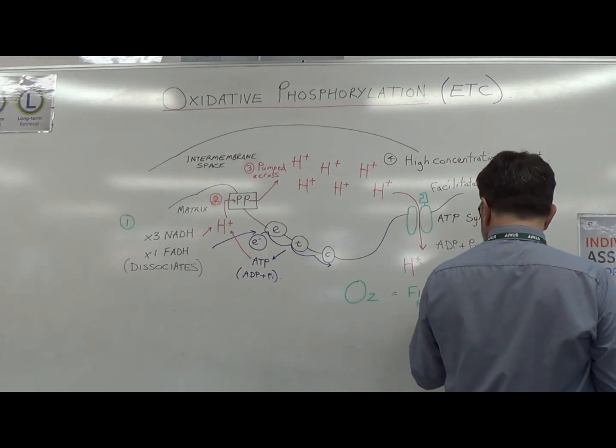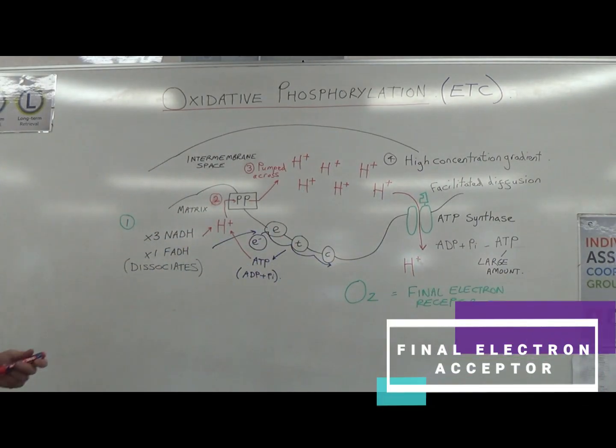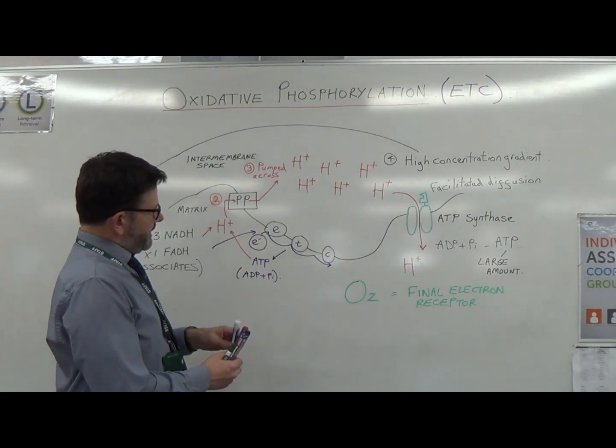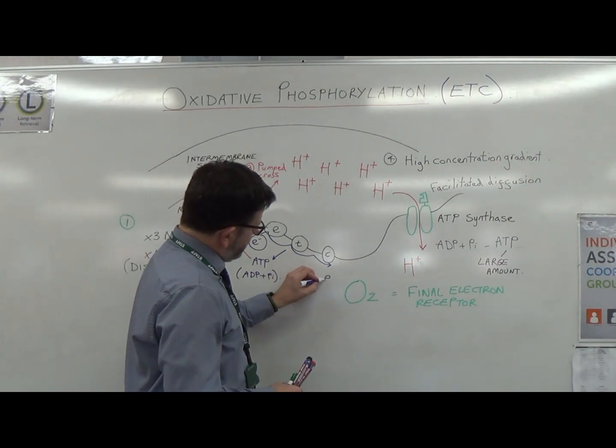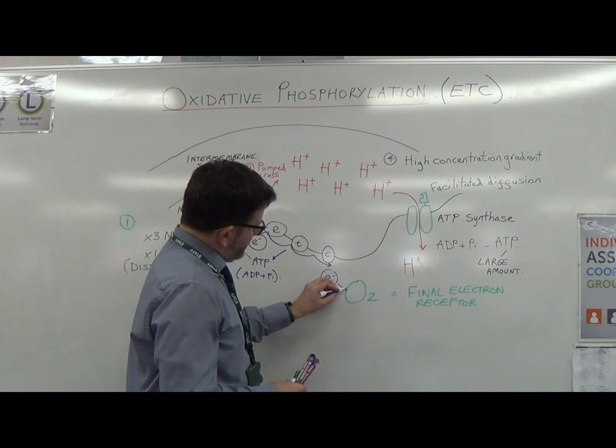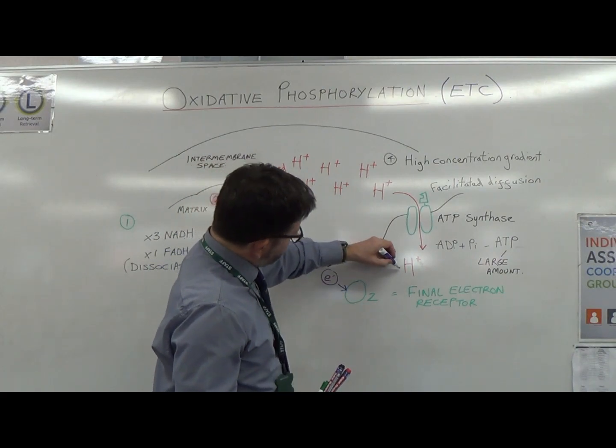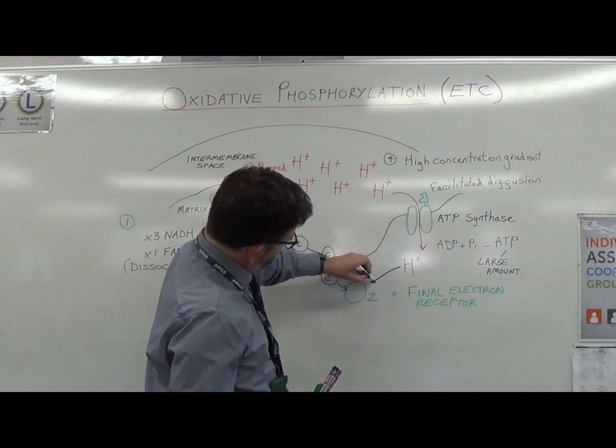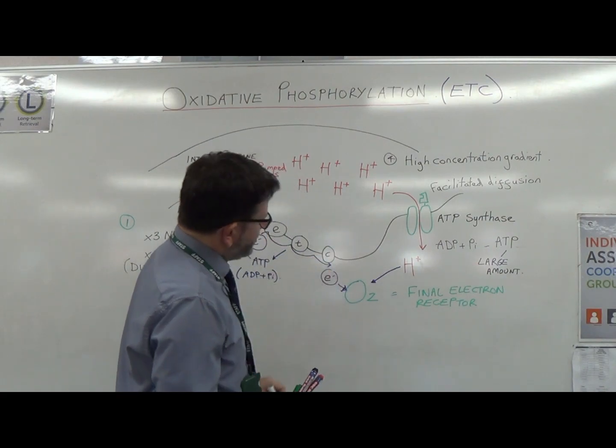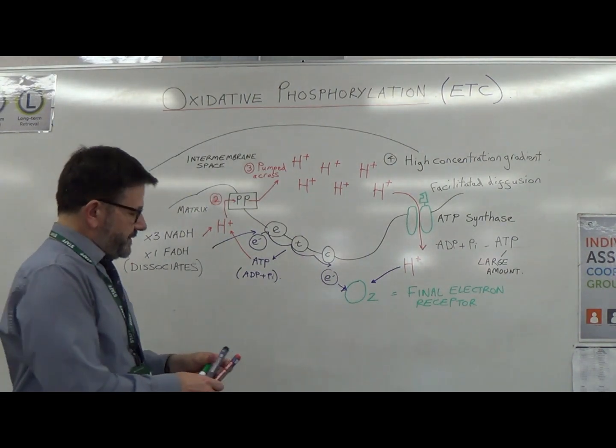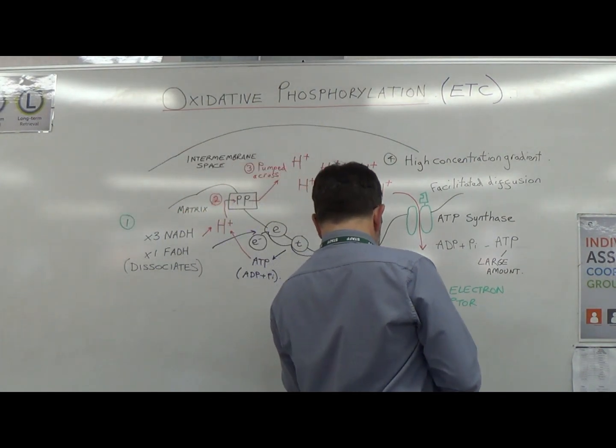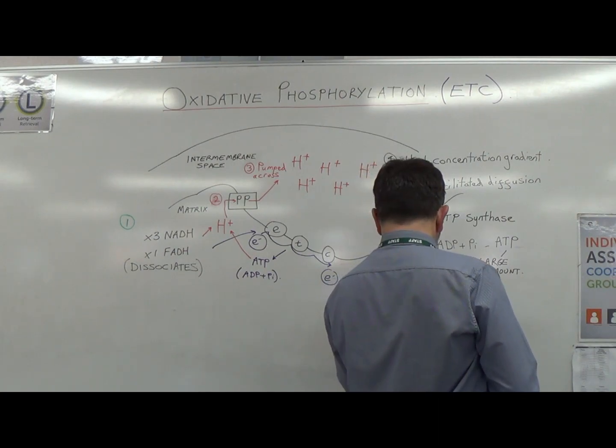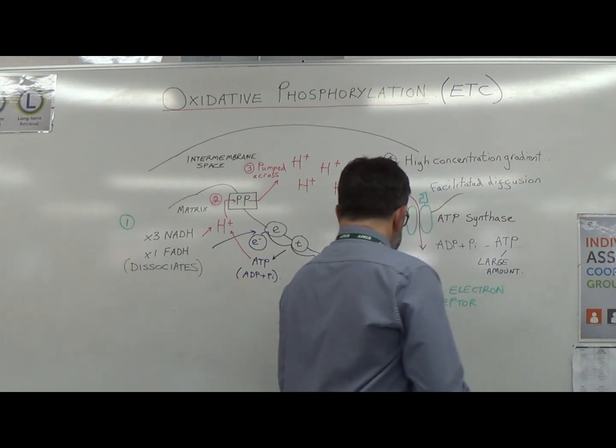So oxygen is known as what we call the final electron acceptor. It's a final electron receptor. What I mean by that is that then the electrons, the spare electron from the ETC, and hydrogen will go to the oxygen and you will produce H2O. So a molecule of water is released.